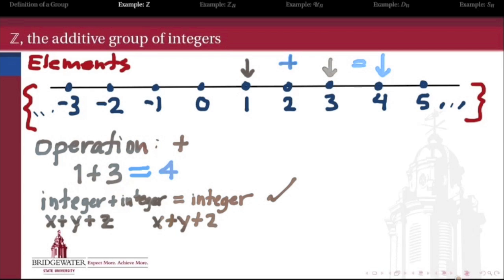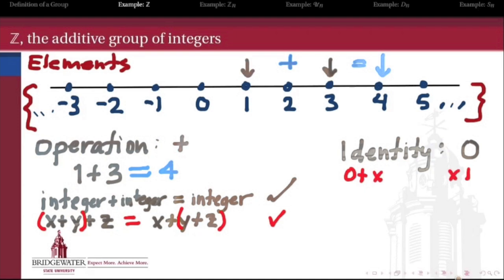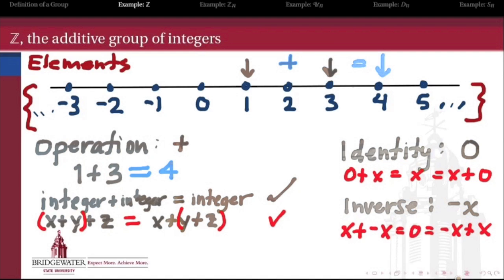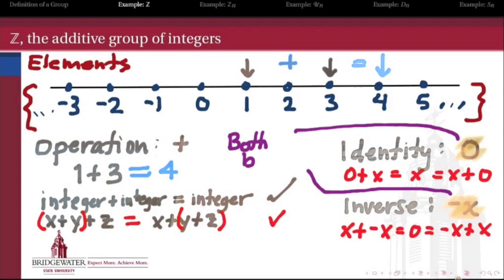The identity element in the group of integers is 0, because if I add 0 to any integer, I get that same integer back. And finally, inverses exist because every integer has an additive inverse which is also an integer. So 3 has negative 3, and when I operate on an element with its own additive inverse, I get the identity 0. The identity and inverse of every element are members of the group—they're all still integers.